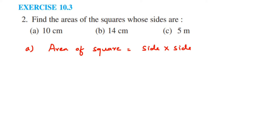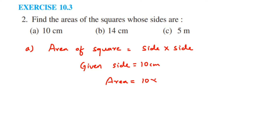In the first part, the side is 10 centimeters. So given side is equal to 10 centimeters. Therefore, area is equal to 10 into 10, which is 100. We get 100 centimeter square, because centimeter multiplied by centimeter is centimeter square. So the first answer is 100 centimeter square.